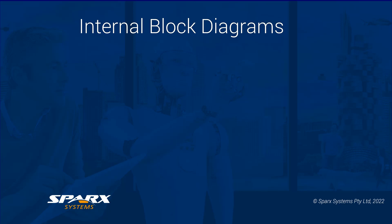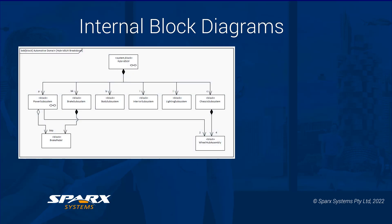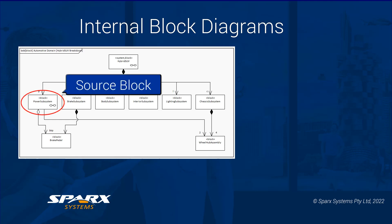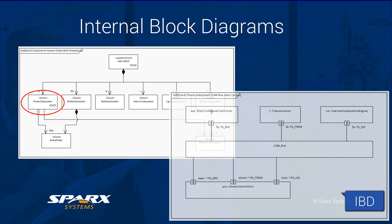The block definition diagrams and the internal block definition diagrams work complementary to one another, with the IBD showing the usage of the parts defined in the block definition diagram that encapsulates them. For example, with the block power subsystem breakdown, on double clicking on this, we have the IBD CAN bus description. This includes parts derived from the blocks defined in the power system block definition diagram.